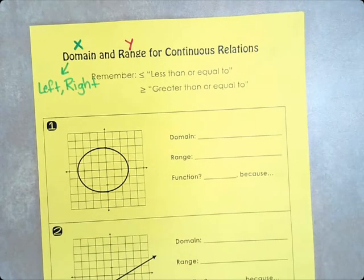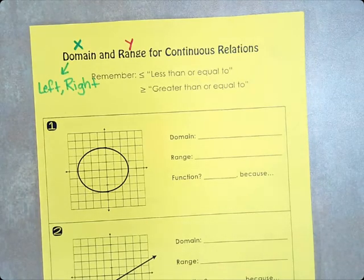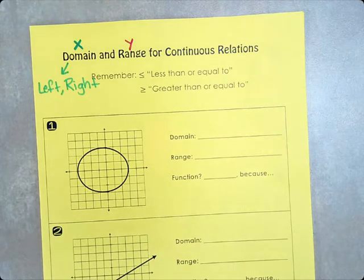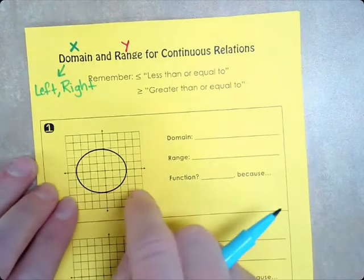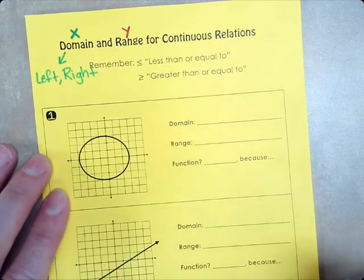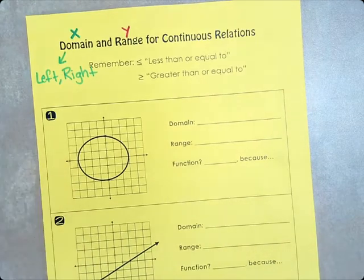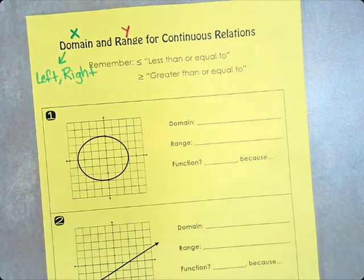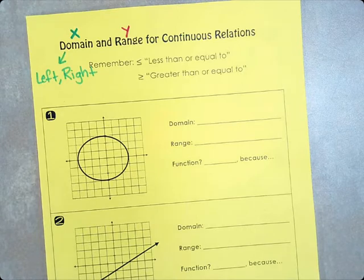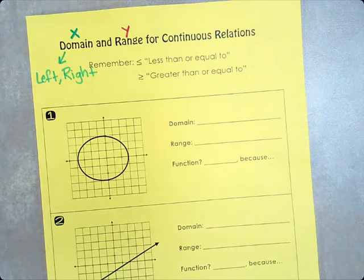I'm going to have y'all draw a fence around the relationship that's being graphed. Either it's a line or a circle or a curve. The first part of the fence is left and right. We're creating what's called restrictions or boundaries. Just like the fence in your backyard. If you have a pasture with horses or cows, they're boundaries. Your cow and your horses can't cross those boundaries of the fence. We are going to create boundaries for each of these relationships.